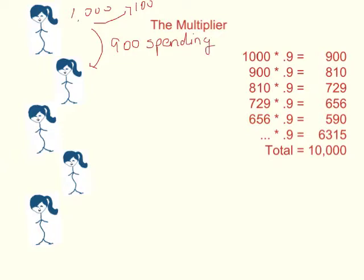What did she spend it on? Rent, gas, food. Okay, so all of those merchants or suppliers in the economy are receiving that $900. What do they do with it?